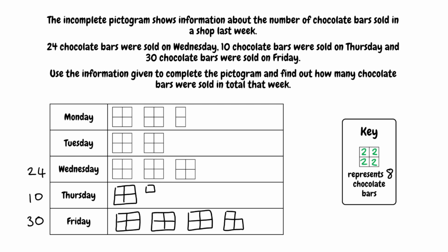So we've completed our pictogram, but we were also told to find out how many chocolate bars were sold in total that week. So we need to find the frequency for Monday and Tuesday. For Tuesday, we've got 2 big squares — a big square represents 8 chocolate bars, so 2 of them must represent 16. For Monday, we've got 2 big squares which represent 8 each, and then half a big square — 2 little squares — which represents 4. So 8 plus 8 plus 4 gives us 20. Now adding up all the frequencies for each day, we should get 100. So there were 100 total chocolate bars sold that week.